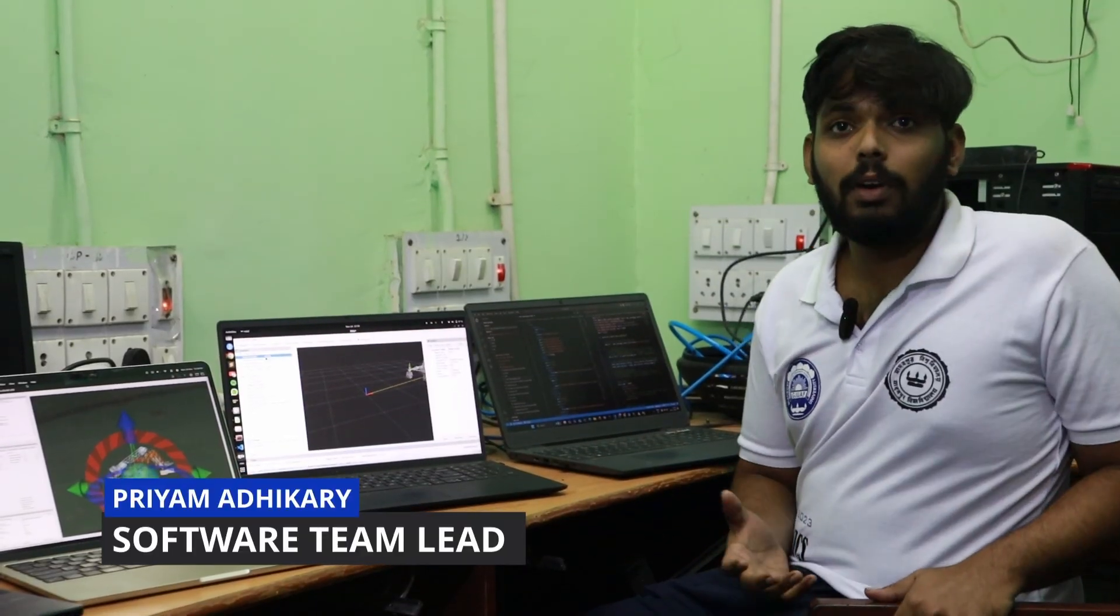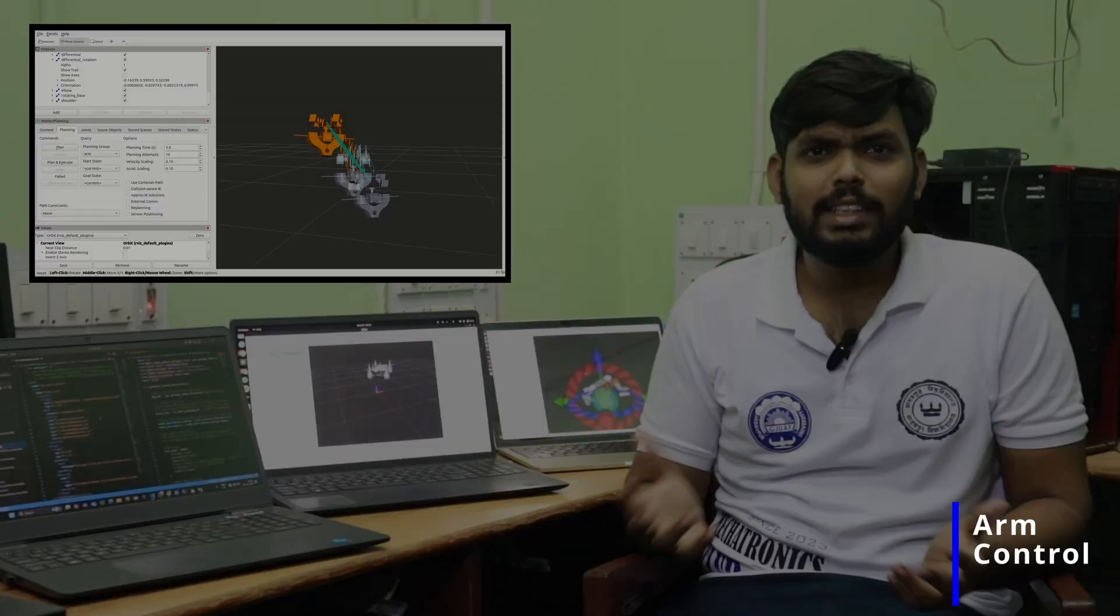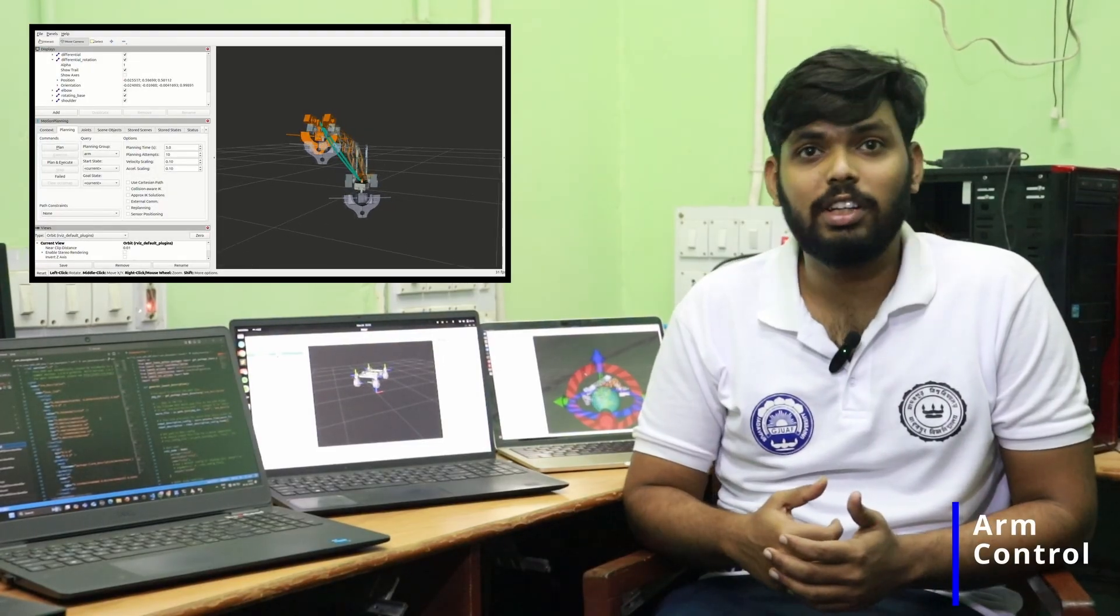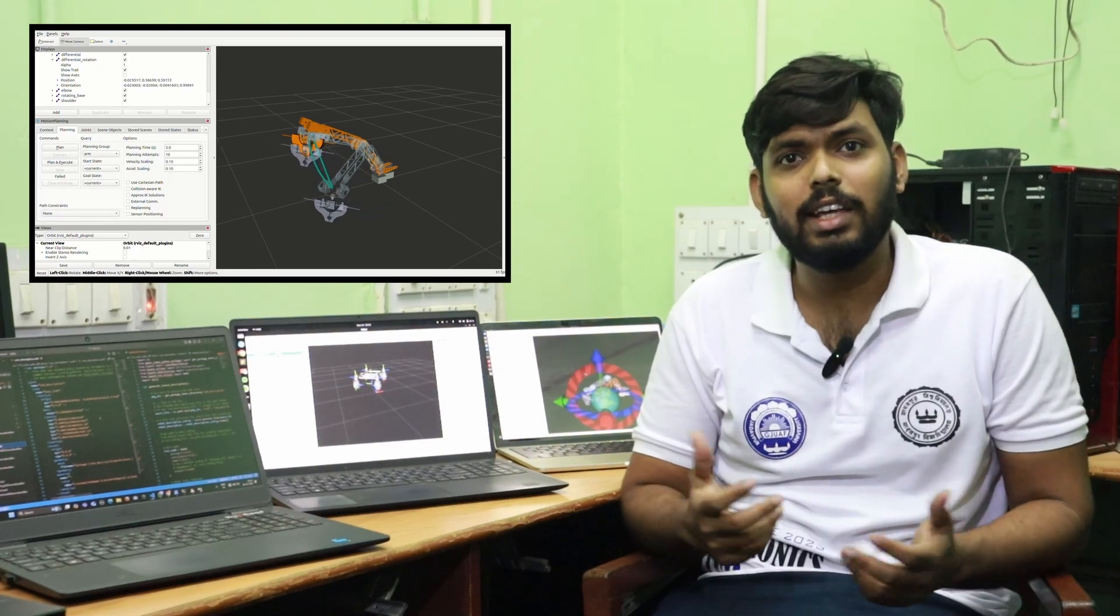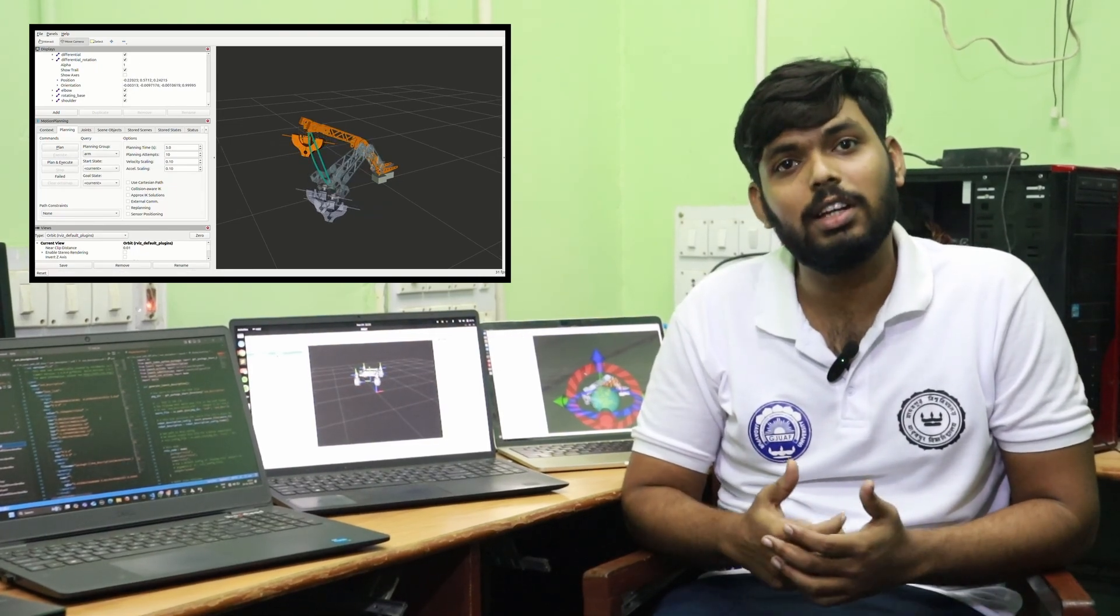For robust software, we use split architecture. An NVIDIA Jetson Nano handles the heavy thinking using the ROS2 framework, while an Arduino microcontroller executes precise motor control. This setup allows us to control our 6-degree of freedom arm using MoveIt 2, which calculates complex movements automatically, making it easy to pick up objects and perform maintenance tasks.